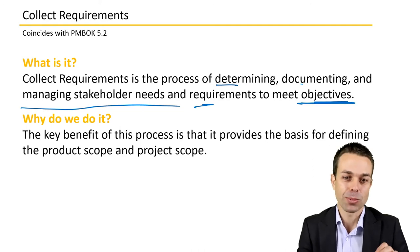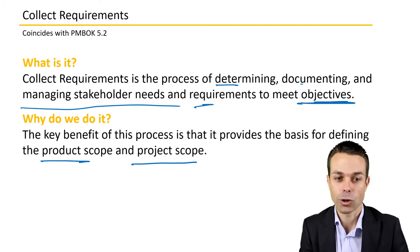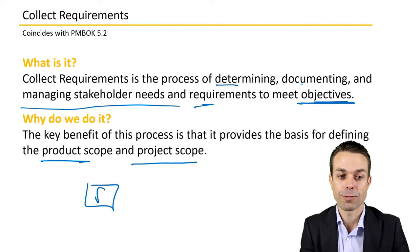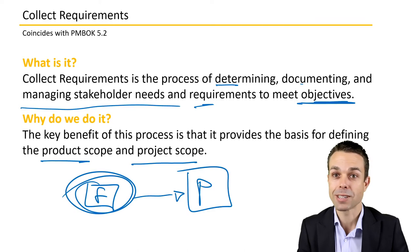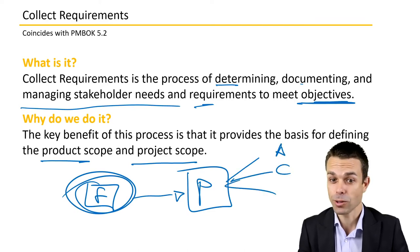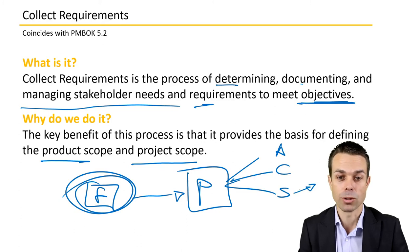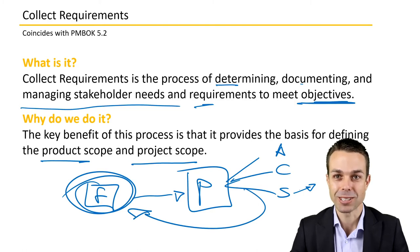We do this because the process provides the basis for defining the product scope and the project scope — what are the products and features we'll be delivering? What does the project have to do? What are the activities, the cost, the schedule? All of this will come out of whatever it is we actually need to deliver as part of this project.